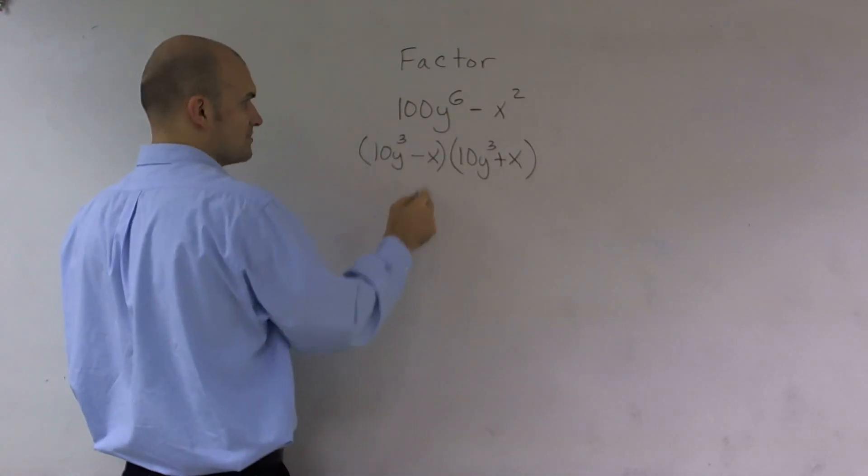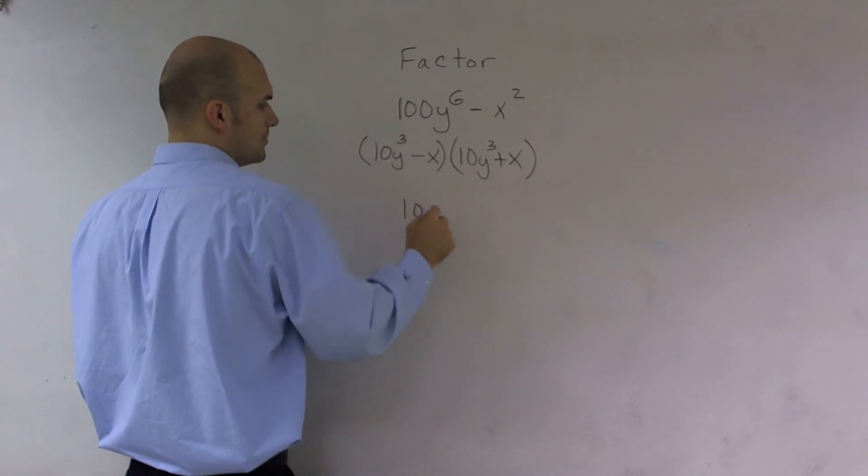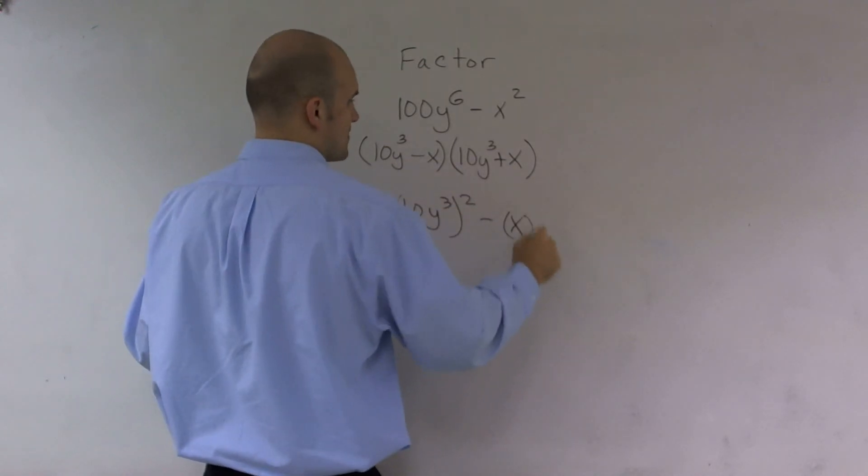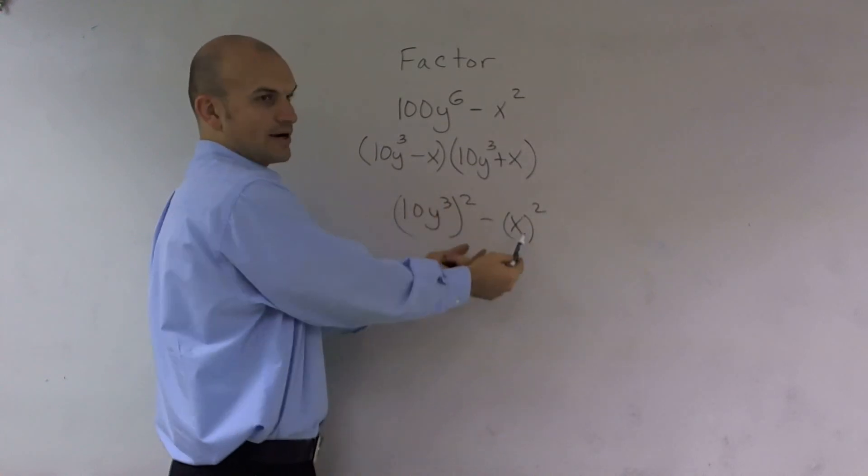This particularly can be rewritten as 10y^3 squared minus x squared. So what it's called is here's a square number, and here's a square number. So it's a difference of two squares.